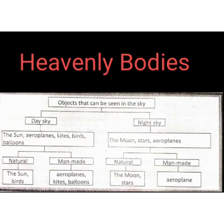The objects that occur naturally are called natural objects. Similarly, the objects that are made by man are called man-made objects. The natural objects you can see during the daytime are the sun and birds. Likewise, the man-made objects you can see during the daytime are aeroplanes, kites, and balloons.